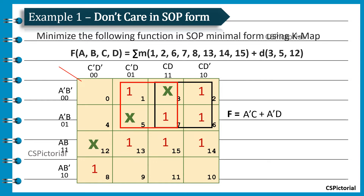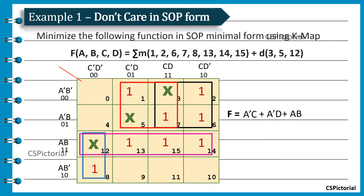In this case, rather than making pairs — that is, groups of two cells containing ones — we make a larger group: the quad involving the don't care cells. This group results in term AB. Finally, we can only make a pair with this one and the don't care, so we go for that and get the resultant term A, C bar, D bar.